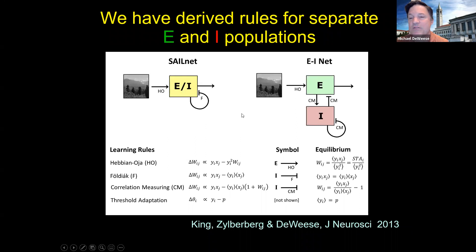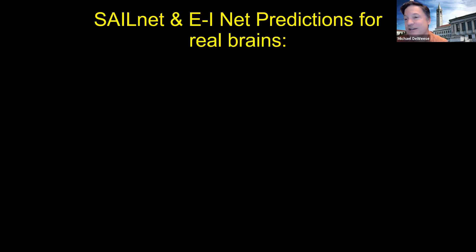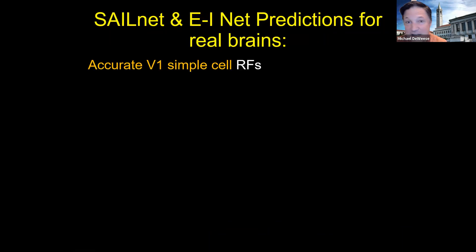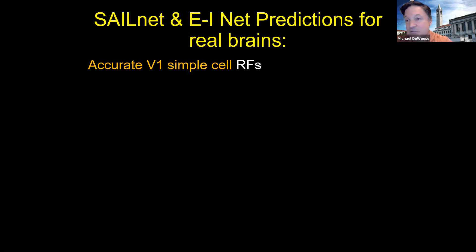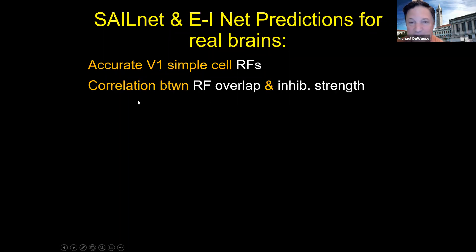The network makes other predictions about inhibitory versus excitatory connections. Beyond receptive field shape, we can say the particular population of fast-spiking (FS) inhibitory neurons — named because when you inject current into them they spike quickly — their computational role is to decorrelate pairs of excitatory neurons. The excitatory neurons are the ones actually representing the visual input. In our case, we know the inhibitory neurons are not representing the input; they are providing the role of decorrelating pairs of excitatory neurons.